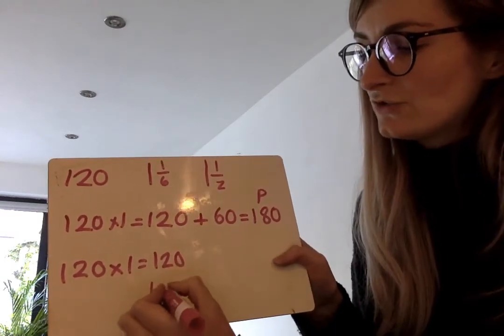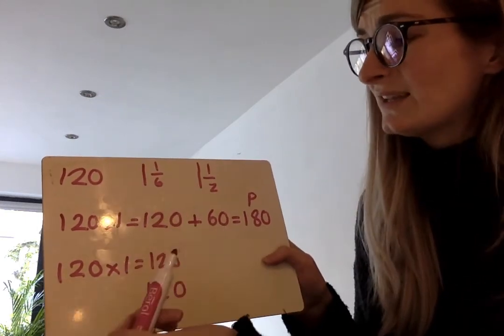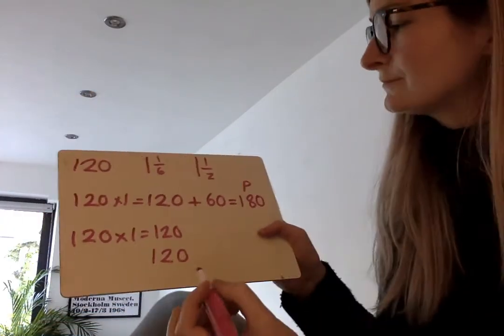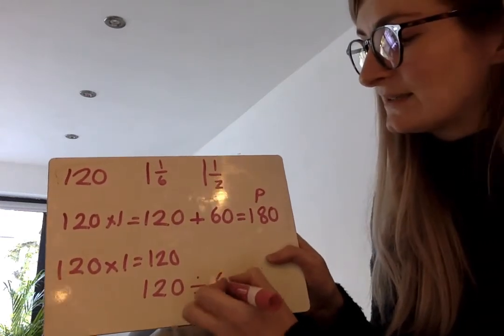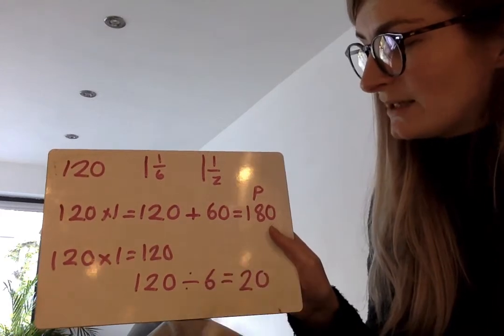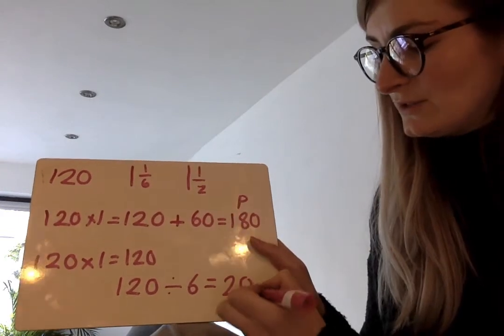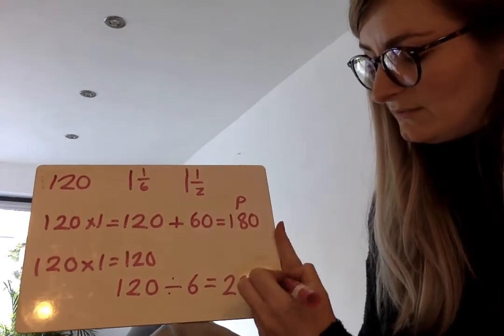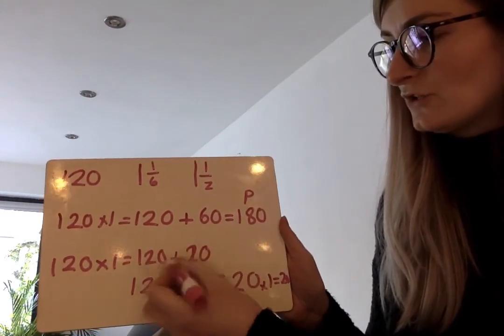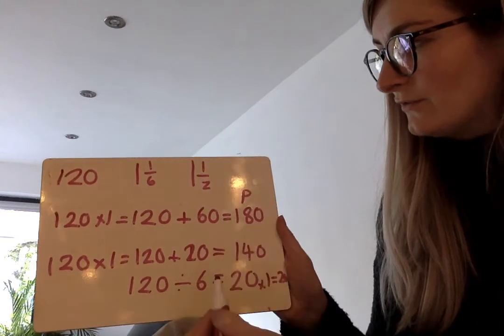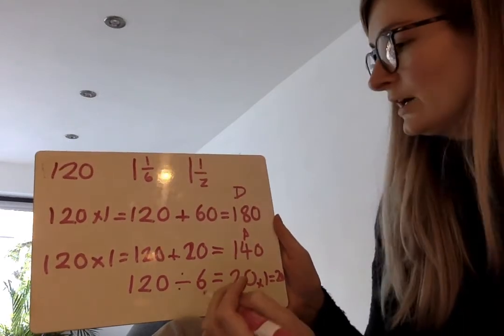And then I'm going to go for this one. I need to times by the whole number. 120 times 1 equals 120. And then I need to do 120 times 1 sixth. To do that I'm going to do 1 sixth of 120. So I'm going to divide by the denominator. 120 divided by 6 equals 20. I would times by the numerator as well, but the numerator is 1, so I can leave it as 20. So my 20 needs to go up here. 120 add 20 equals 140. This is how many pizzas they needed. Hopefully that makes sense.